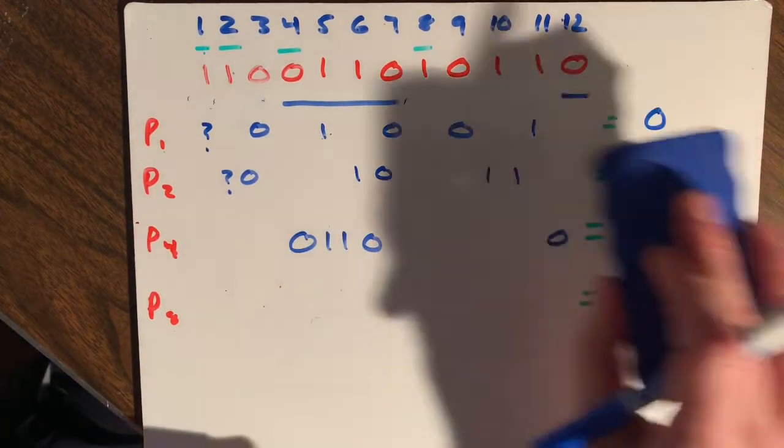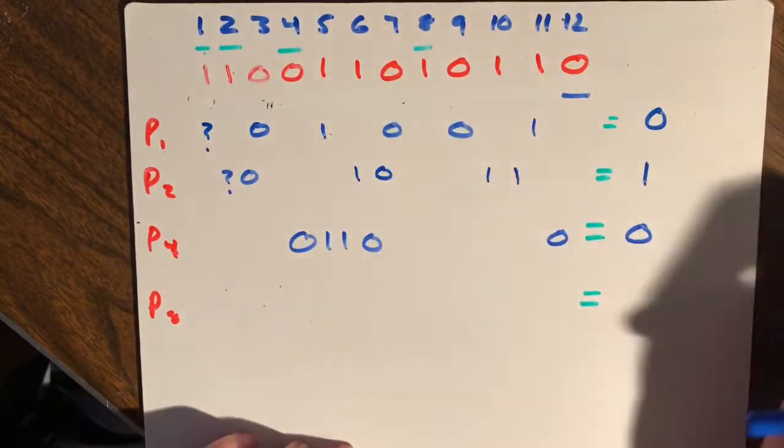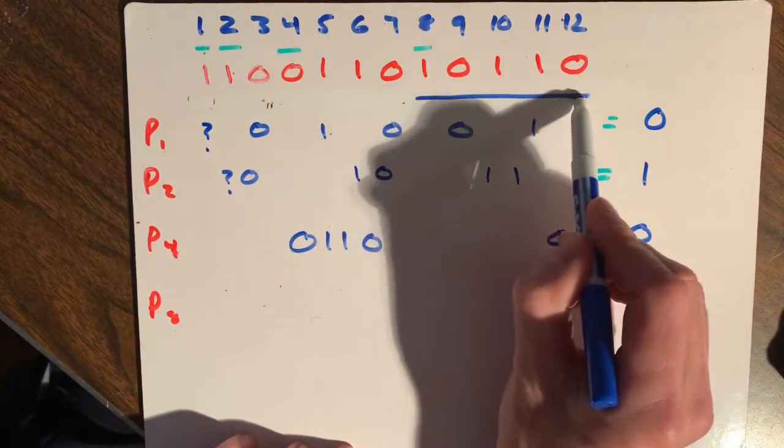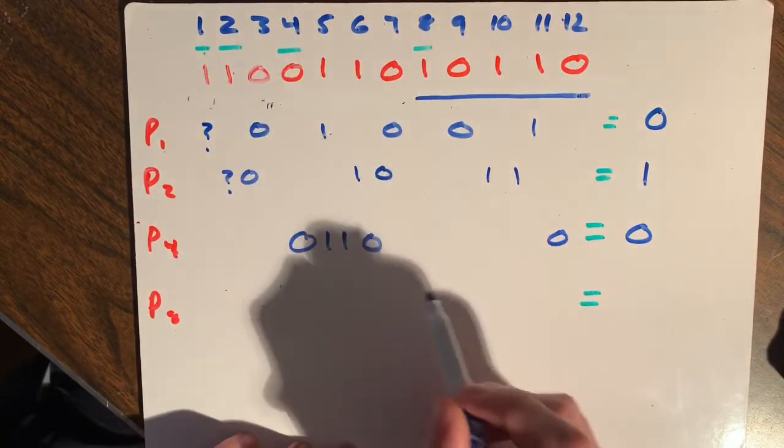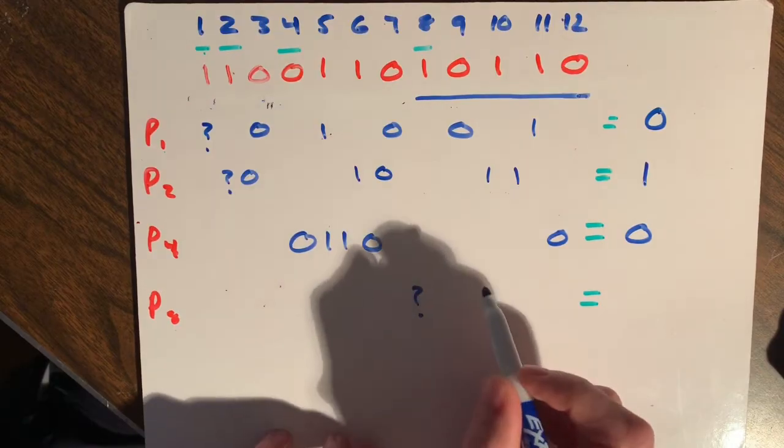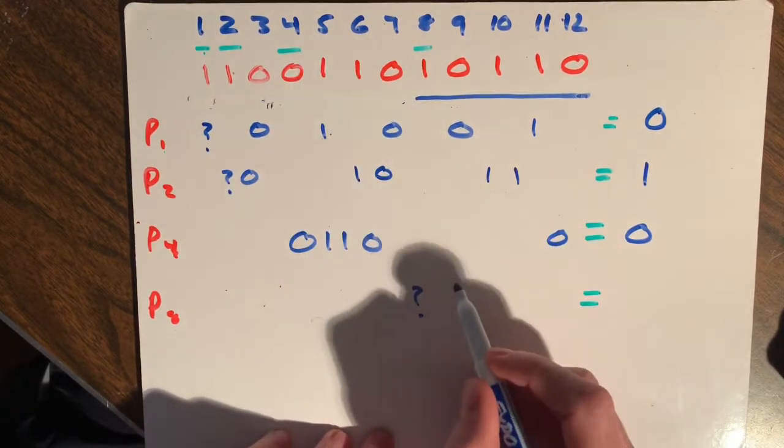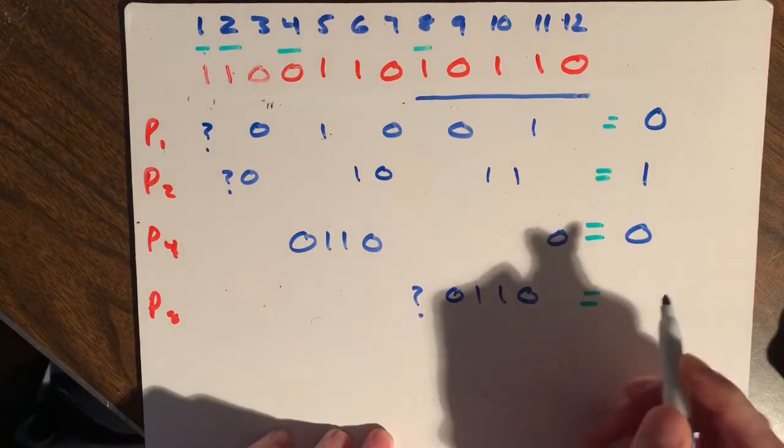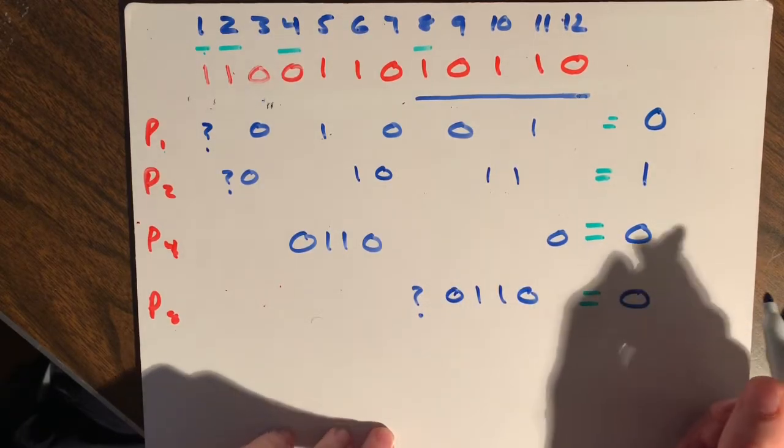And lastly, we're going to check eight and skip eight. So that will be from here forward, and we don't count the first one because it's a parity bit. And that leaves us zero, one, one, zero, which is even. So we put a zero here.